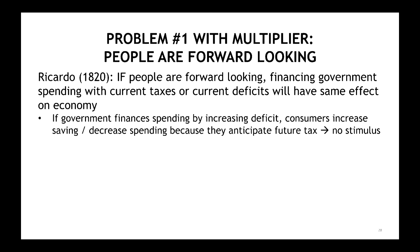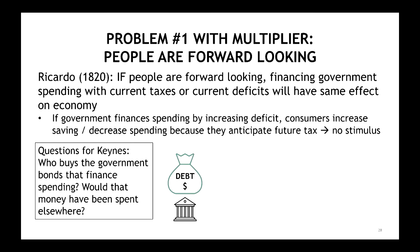There are real problems with the Keynesian multiplier, both empirically and in theory. If people are forward-looking, then financing government spending with current taxes or current deficits is going to have the same effect on the economy — it doesn't matter whether you tax people or run deficits. The question for Keynes is: who's going to buy the government bonds that finance spending, and would that money have been spent elsewhere?